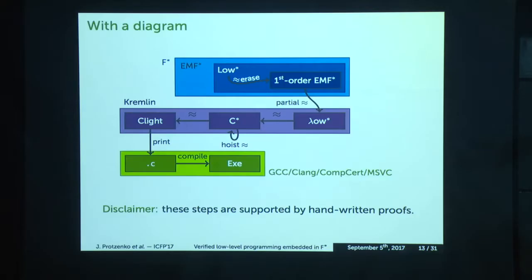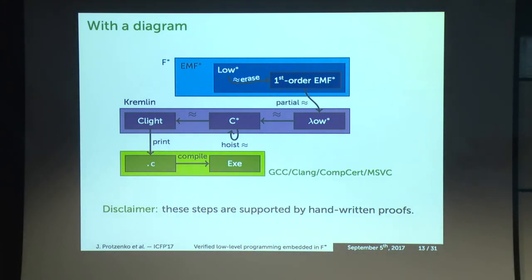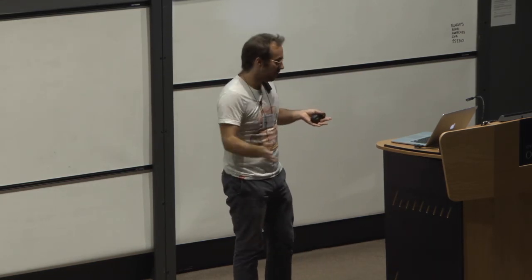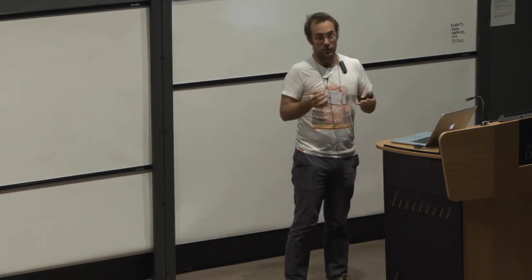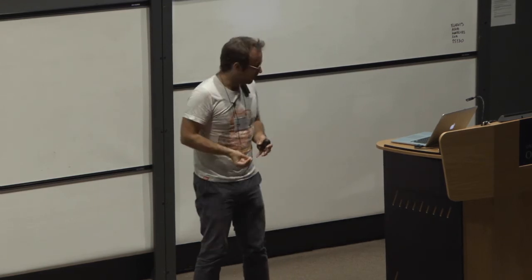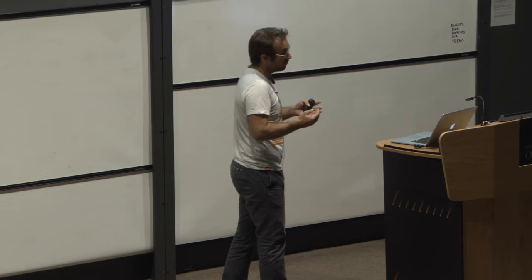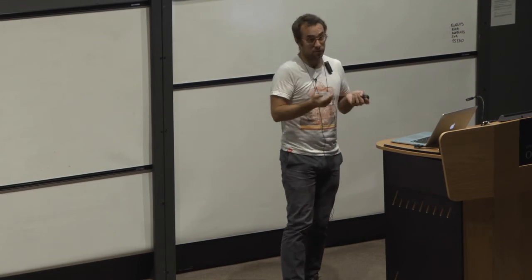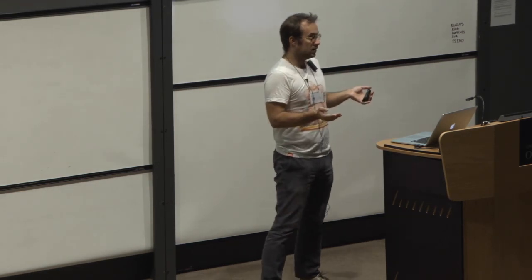We have a formalization roughly structured as follows. We base ourselves on an earlier formalization of F* from POPL 2017 called EMF*. Out of EMF* we carve out the subset called L*, erase the proofs, specifications, and refinements to get first-order EMF*, and model this as lambda-lo-star — our core lambda calculus for that small first-order subset. We show that semantics are preserved from lambda-lo-star to C-star, an ideal model of C, then on to CompCert's C-Lite, from which we can dump C files and rely on CompCert or commercial compilers like GCC, Clang, or MSVC.